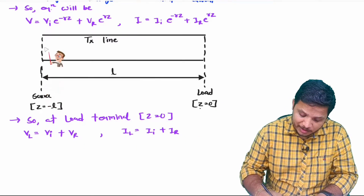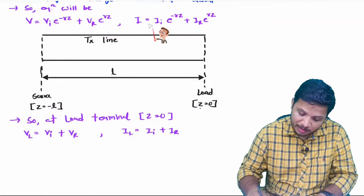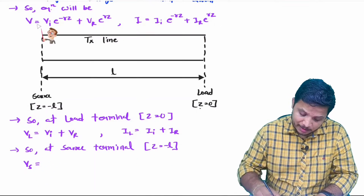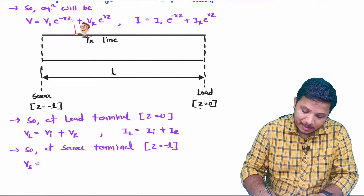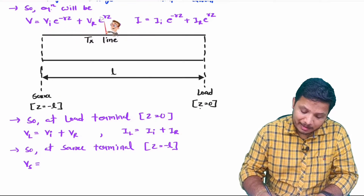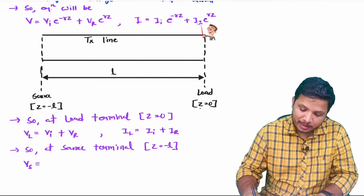To find the source voltage and source current, I place z equals minus L in the two equations. Source voltage becomes Vi times e to the power plus gamma L, plus Vr times e to the power minus gamma L, and similarly for source current.